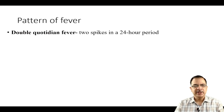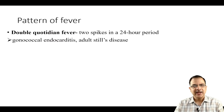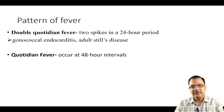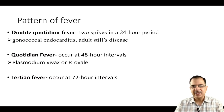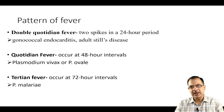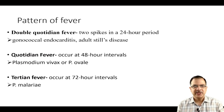Double quotidian fever means there will be two spikes in a 24-hour period. This is characteristic of gonococcal endocarditis and importantly adult Still's disease. Fever occurring at 48-hour intervals is due to malaria — Plasmodium vivax or ovale — and fever occurring at 72-hour intervals is classical of P. malariae. However, these malarial fever patterns at 48 or 72 hours are not commonly seen these days.